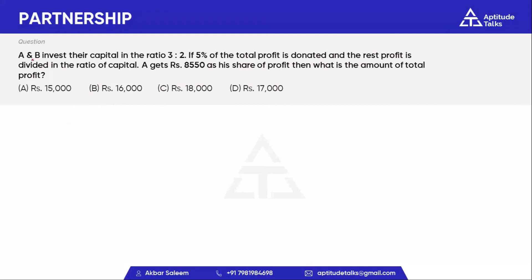Next question. A and B invest their capital in the ratio of 3 to 2. If 5% of the total profit is donated and the rest of the profit is divided in the ratio of capital, A gets 8,550 rupees as a share of profit. Then what is the amount of total profit?